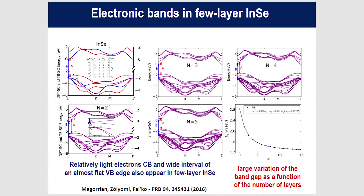Going to few layers, you can see very strong splitting in the conduction and valence states. The gap progression shows it is very slightly indirect, and that offset gets tiny — almost impossible to see by five layers. The gap goes from about 1.3 eV in the bulk all the way up to around 2.8–2.9 eV for the monolayer, giving a very strong dependence on crystal thickness.